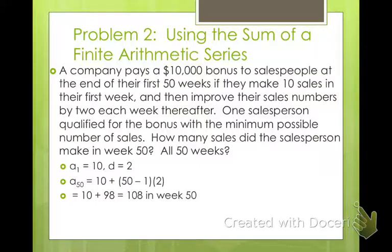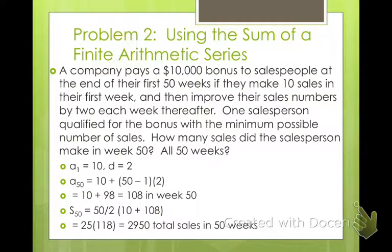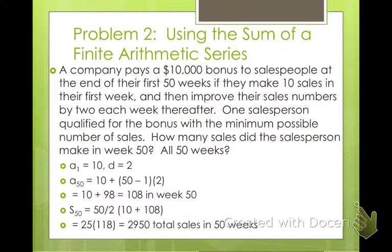We found in the 50th week, now if we find the sum of all the sales from weeks 1 through week 50, we'll use our summation formula. There were 50 weeks. S sub 50 equals 50 divided by 2 times a sub 1 is 10 plus a sub n, our 50th week is 108. So you add 10 plus 108, that's 118 times 25. You get that that person made a total of 2,950 sales in those 50 weeks. That's a lot of sales. I'd be willing to give you a bonus.